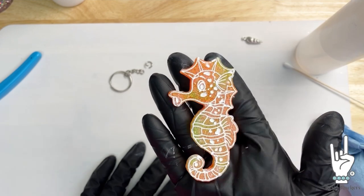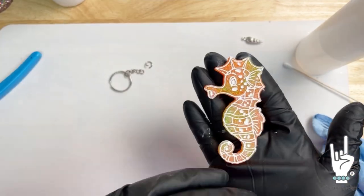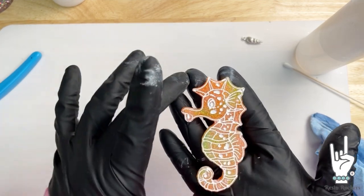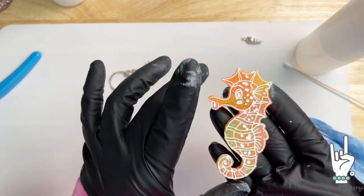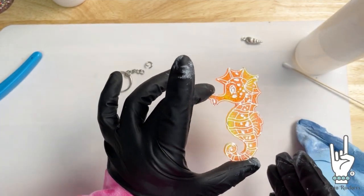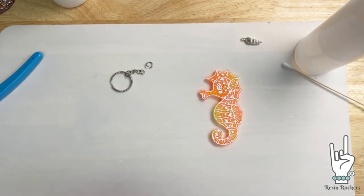And there's your seahorse. Now you can coat this with UV resin and you can seal it in, but it will actually last just fine without it. So if you want to leave it like this, which I think is super cute, you can do that as well.